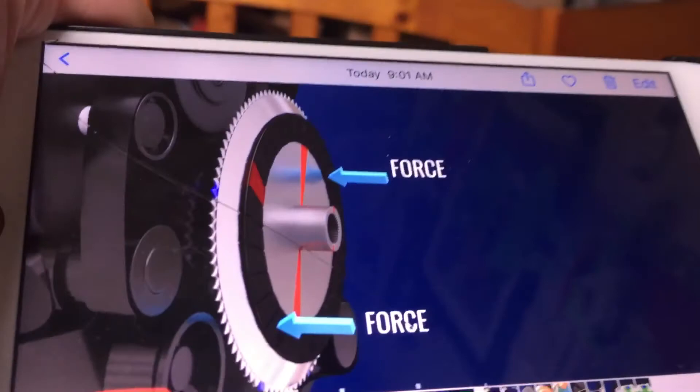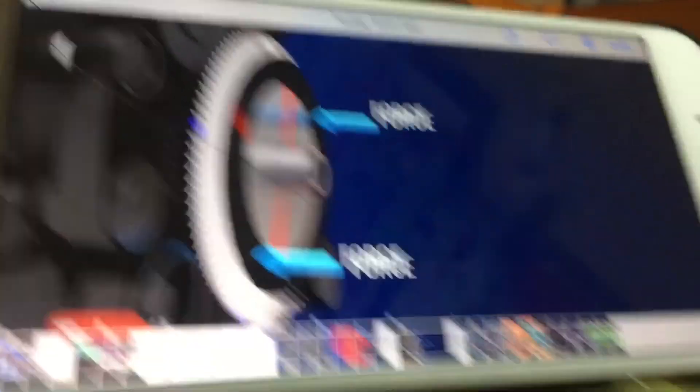So that's how a clutch works. As you can see, force would go against there and against the flywheel. So that's how a clutch works.